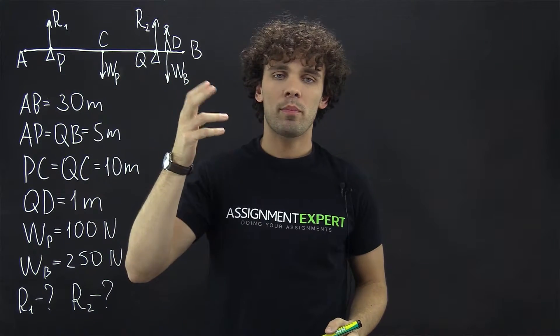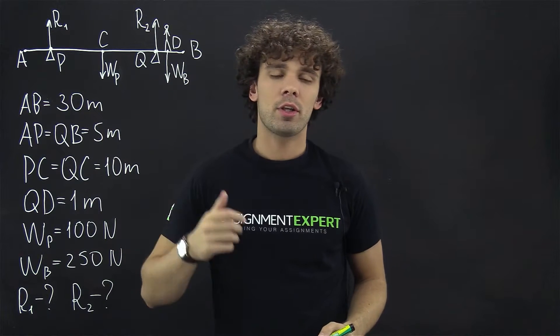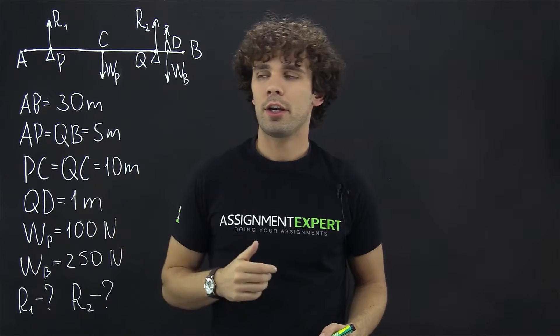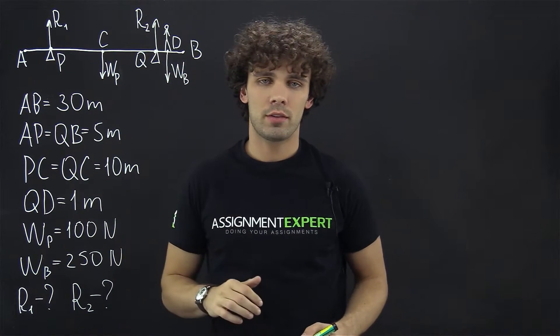We have a uniform plank AB which is 30 meters long and weighs 100 newtons. This plank is pivoted at points P and Q, which are 5 meters away from each end of the plank.